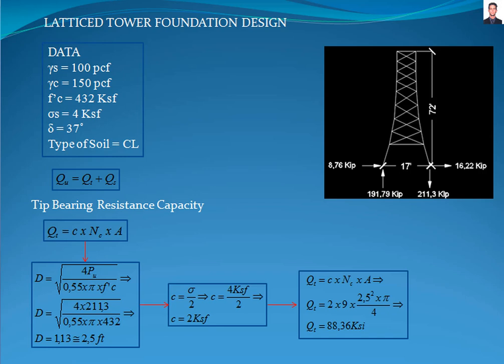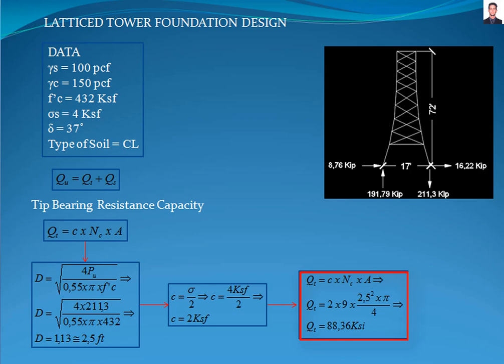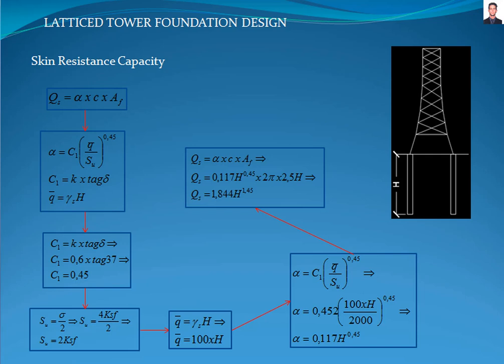To calculate the tip bearing resistance, the first step is to calculate the diameter required for the piles for the compression force with this equation, where P_u is the ultimate compression force and F_c is the compressive strength of the concrete, giving a result of 1.25 feet. However, according to IEEE 691 standard section 5.3, a minimum diameter of 2.5 feet is recommended. The next step is to calculate the cohesion of the soil with this equation, where sigma is the bearing capacity of the soil, resulting in 2 kilopounds per square foot. Finally, the pile tip resistance is 88.36 kilopounds.